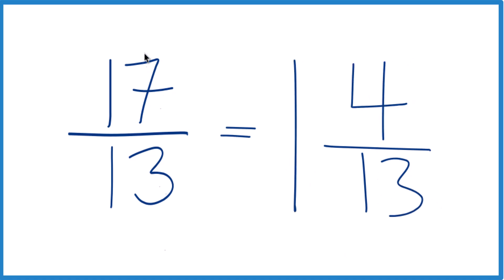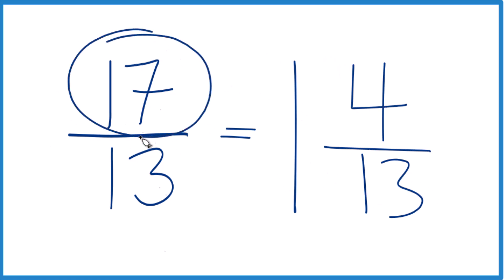And it ends up that 17 thirteenths equals the mixed number 1 and 4 thirteenths. And you can check that too, because 1 times 13 is 13. 13 plus 4, that's 17, and you keep the 13, the denominator, the same.